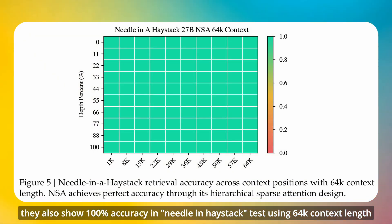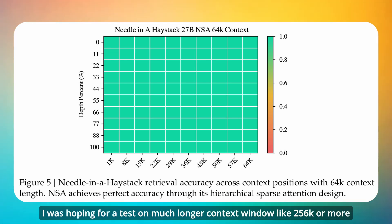They also show 100% accuracy in needle in haystack tests using 64k context length. I was hoping for a test on much longer context windows like 256k or more.